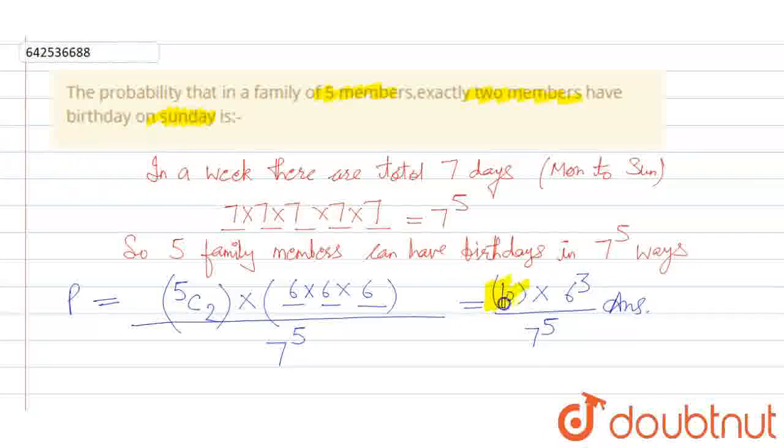This is the probability that exactly 2 members would be having birthday on Sunday. This is the final answer. Thank you.